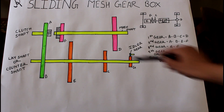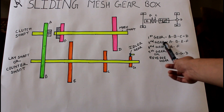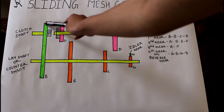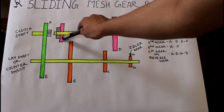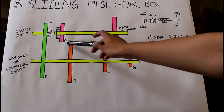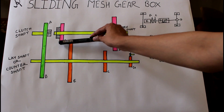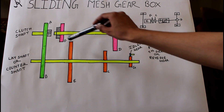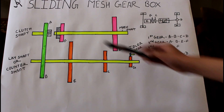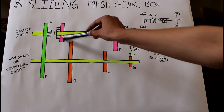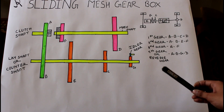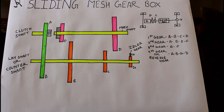For selection of the second gear, power is transmitted along the path A → B → E → F. Gear F on the main shaft is moved backward using the selector mechanism to mesh with gear E. When gears E and F mesh with each other, second gear is selected.